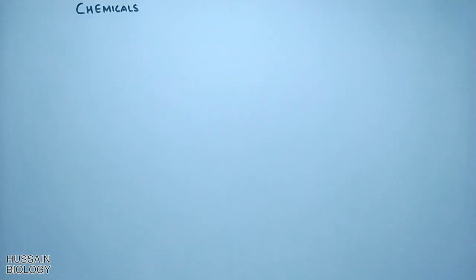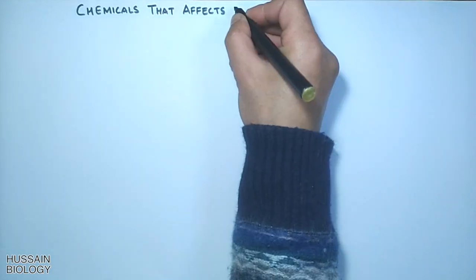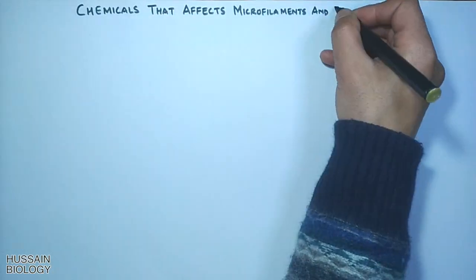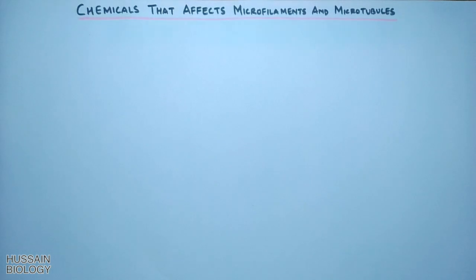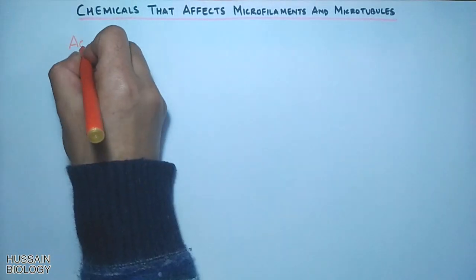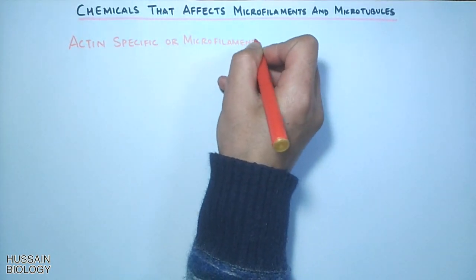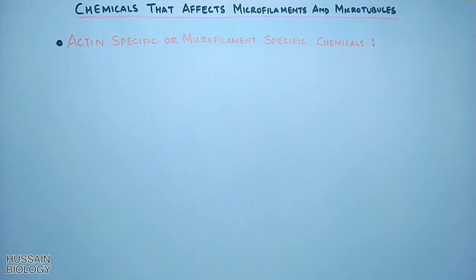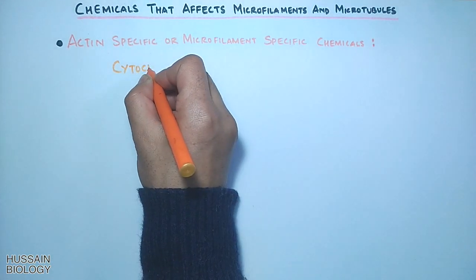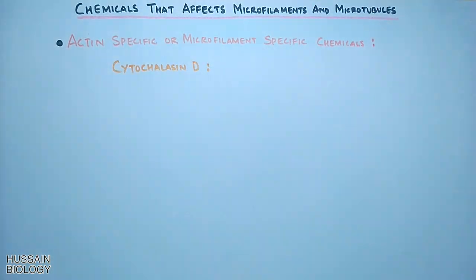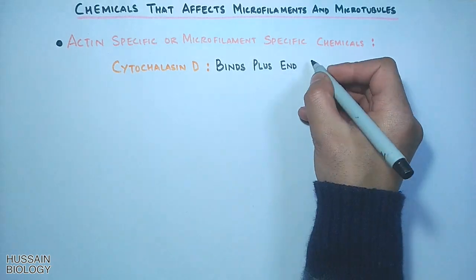In this video we will be discussing chemicals that affect microfilaments and microtubules. First, let's see the actin-specific or microfilament-specific chemicals. First we have Cytochalasin D — this Cytochalasin D binds the plus ends of actin filaments and prevents elongation.